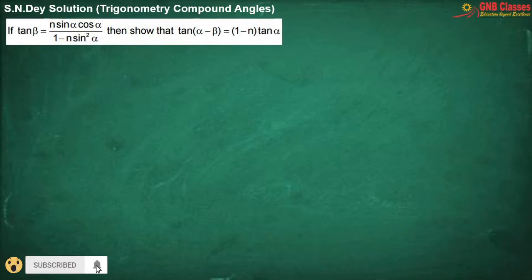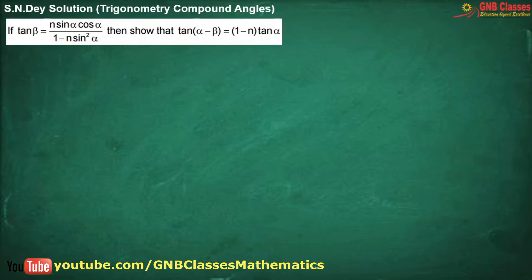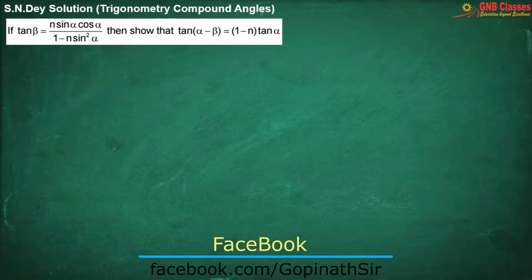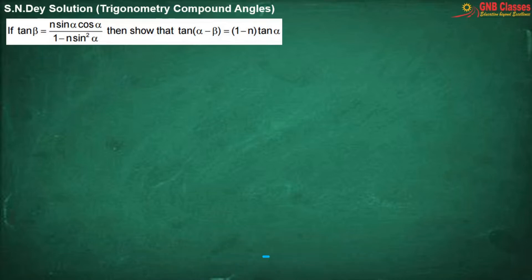In this problem, tan beta is given to us, and we have to prove that tan alpha minus beta equals 1 minus n into tan alpha. If you observe, you will find that in the right hand side of the proof part there is no beta. So you have to remove that beta.